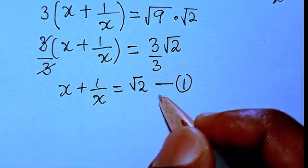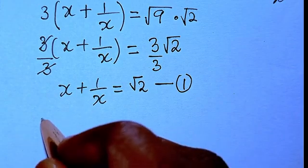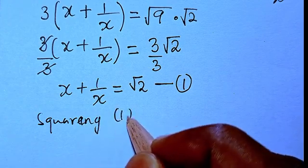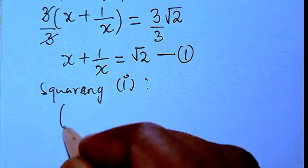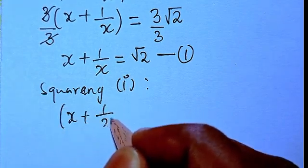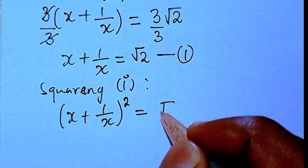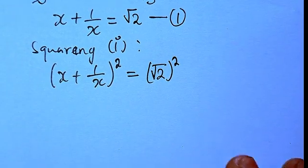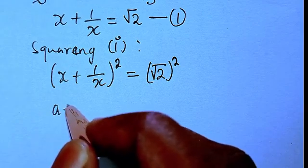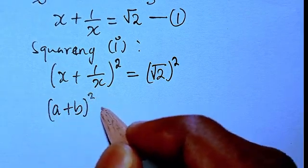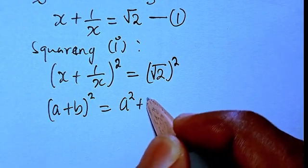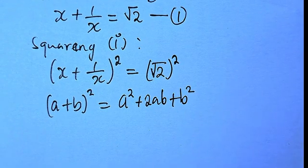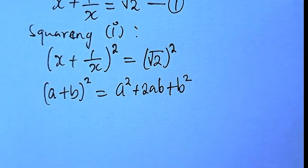We continue by squaring both sides of Equation 1: (x + 1/x)² = (√2)². This takes the form (a + b)² which gives us a² + 2ab + b², the perfect square expansion.